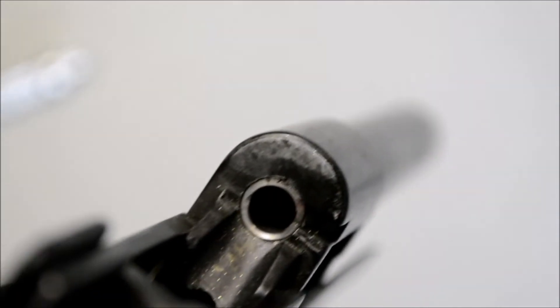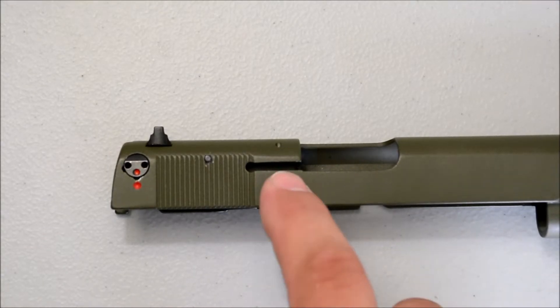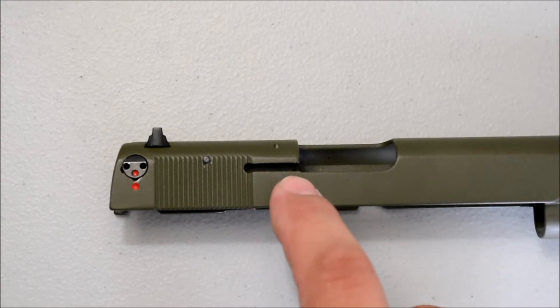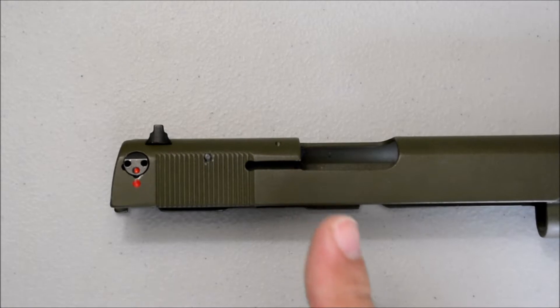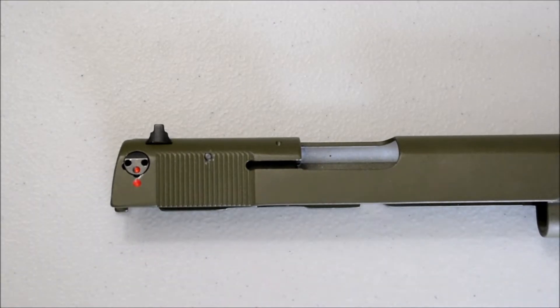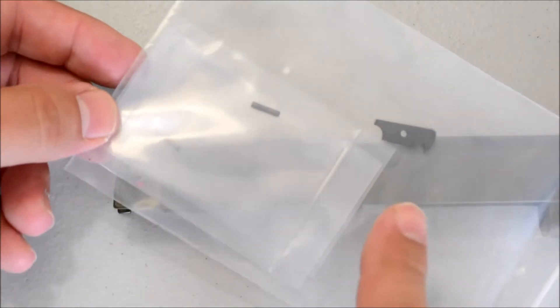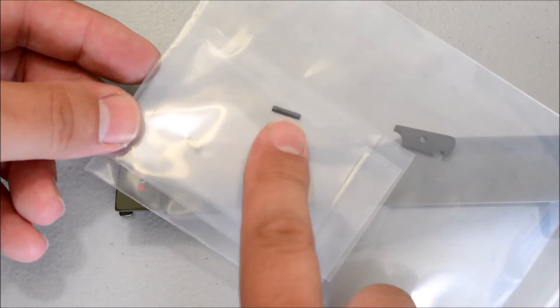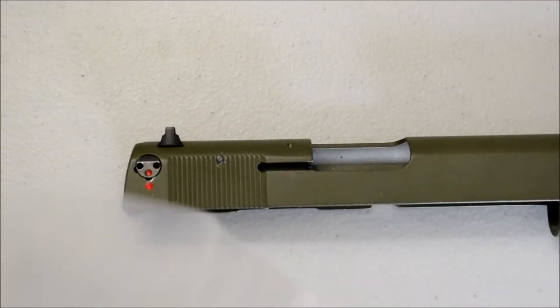Okay, so as I mentioned earlier, we're going to be putting in the extractor, and that's going to go in this empty slot here. Now, with this, we've got a little parts kit that I ordered from Chiappa. And you can see there's the extractor there, the extractor pin, and then the little spring here. So let's get that opened up.